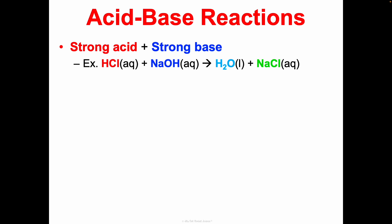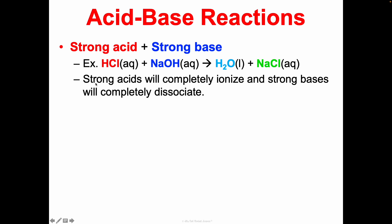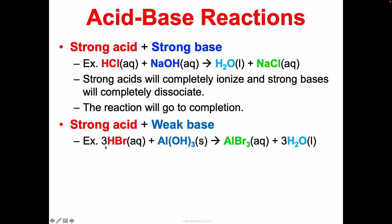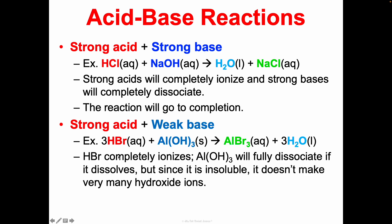Back in concept two we talked about qualitatively describing acids and bases as strong versus weak, and we see different things happen depending on the combination. An example of a strong acid with a strong base is the equation we've looked at several times — I'll keep color coding strong acids red and strong bases blue. Strong acids completely ionize, strong bases completely dissociate, and the reaction goes to completion.